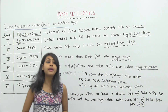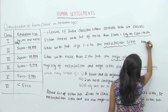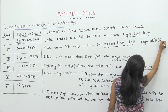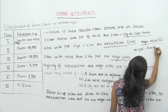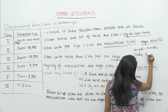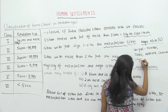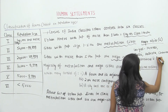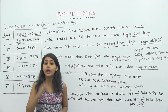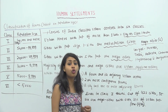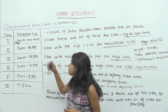We have 6 mega cities in our country. The largest is Mumbai. Apart from that, we also have Delhi, Kolkata, Chennai, Hyderabad, and Bangalore. These mega cities have a population size of 5 million or more, and 21% of the urban population lives in them. This concludes the first classification of towns based on their population size.